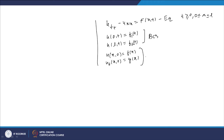We can convert the non-homogeneous boundary conditions into homogeneous ones using the following linear transformation. Consider v(x,t) = u(x,t) + a(t)x + b(t), where a(t) and b(t) are functions of t. With this new function, we aim to make the boundary conditions homogeneous, since so far we have only handled problems with homogeneous boundary conditions.